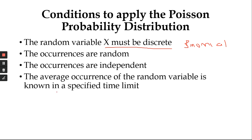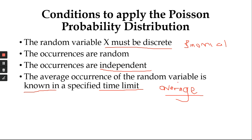The occurrences must be independent — arrivals must be independent of each other. The average occurrence of the random variable must be known in a specified time: what is the average number of occurrences per hour, per second, per day, per week, per year? The word 'average' or 'expected number' is very important for Poisson — we need to know the average occurrence in a given time limit.